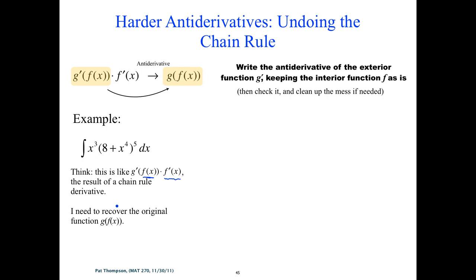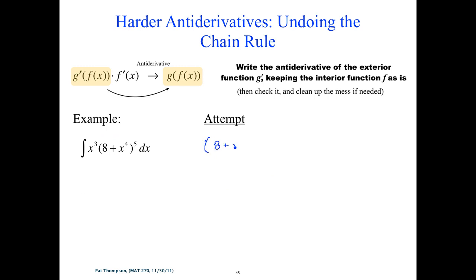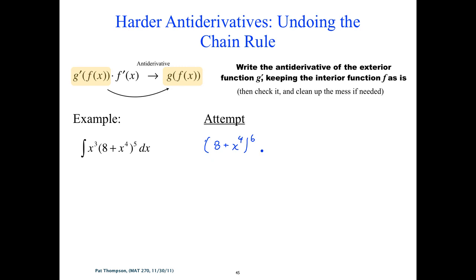We're going to focus on the g prime of f — the (8 plus x to the 4th) to the 5th — and take the antiderivative of the external function, which is something to the 5th. The antiderivative of something to the 5th is that same thing to the 6th divided by 6. So our first attempt is (1/6)(8 plus x to the 4th) to the 6th. Now check it by taking the derivative.